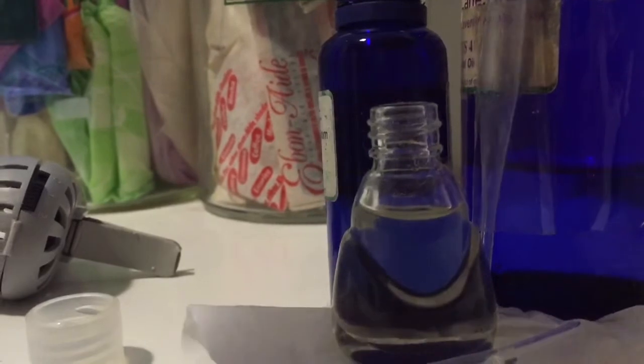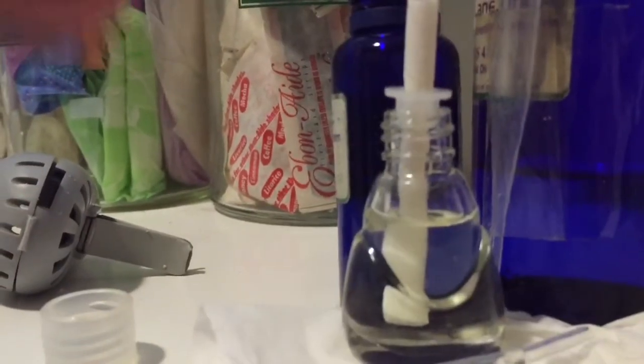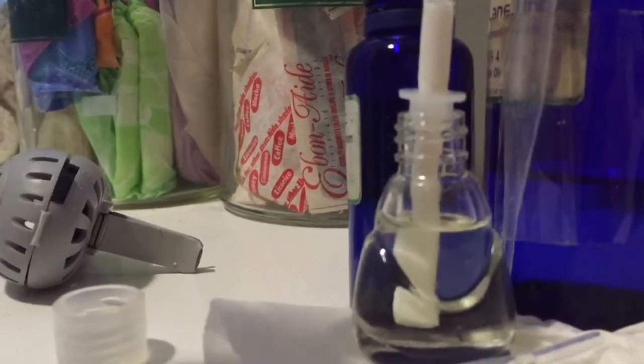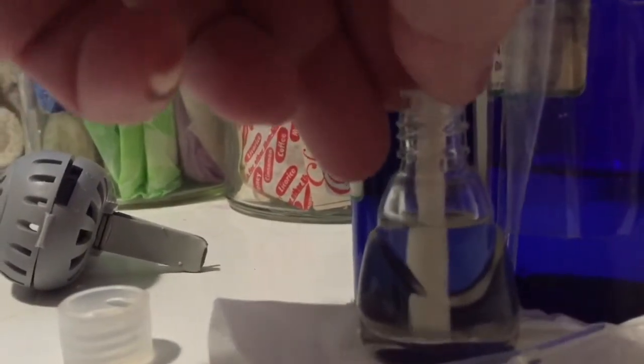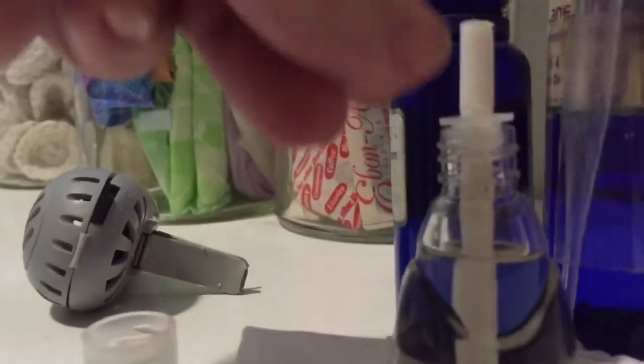So once you've filled the bottle, then you're gonna take the wick that's been dry, make sure it's dry and doesn't feel like it's still oily or whatever. And you're just gonna stick it back in so that that little thing is the whole way down and the wick should be touching the bottom of the bottle.